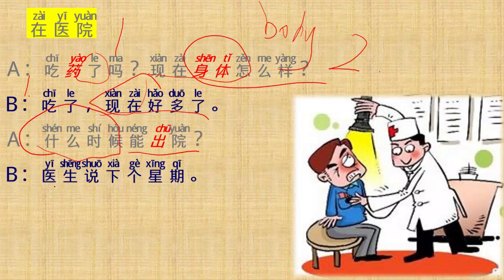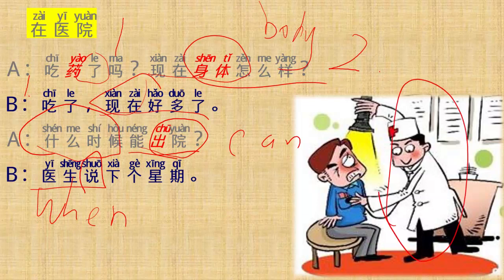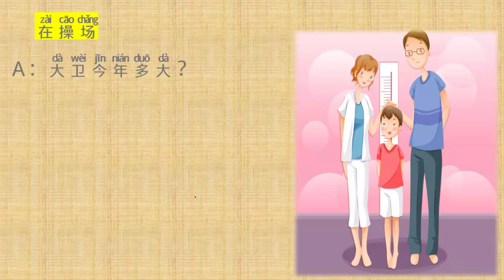什么时候能出院? When can we check out? 能出院. 什么时候能出院? 医生说 下个星期, next week. 好,第三 text three 在操场, on the playground. 在操场.